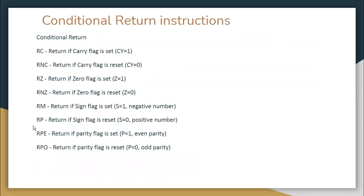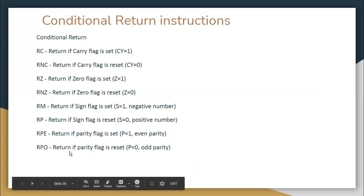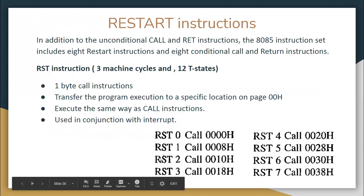Respective conditional return instructions are also available: RC — return if carry flag is set; RNC — return if carry flag is reset; RZ — return if zero flag is set; RNZ — return if zero flag is reset; RM — return if sign flag is set; RP — return if sign flag is reset; RPE — return if parity flag is set; RPO — return if parity flag is reset (odd parity).